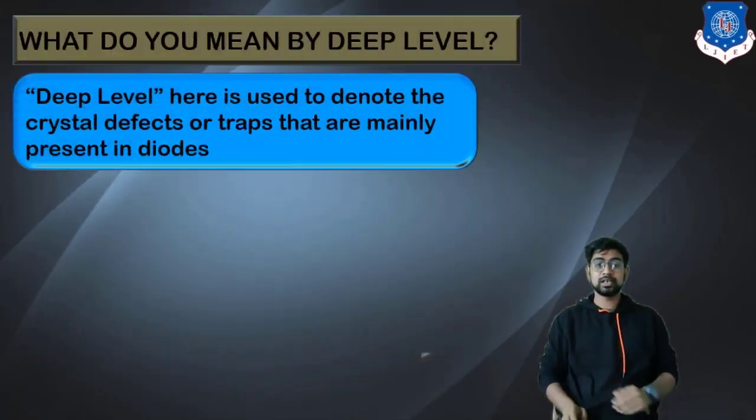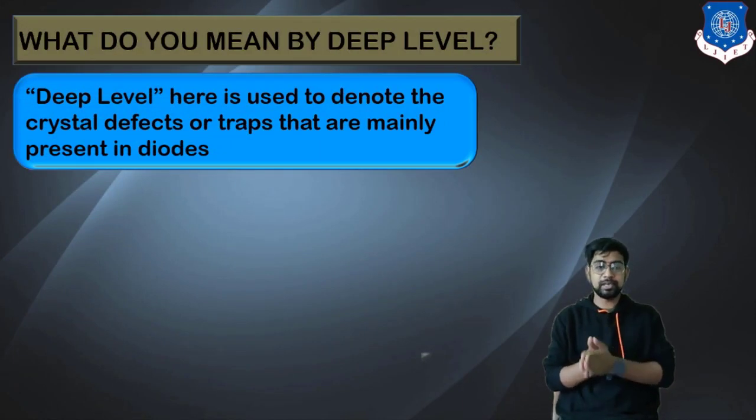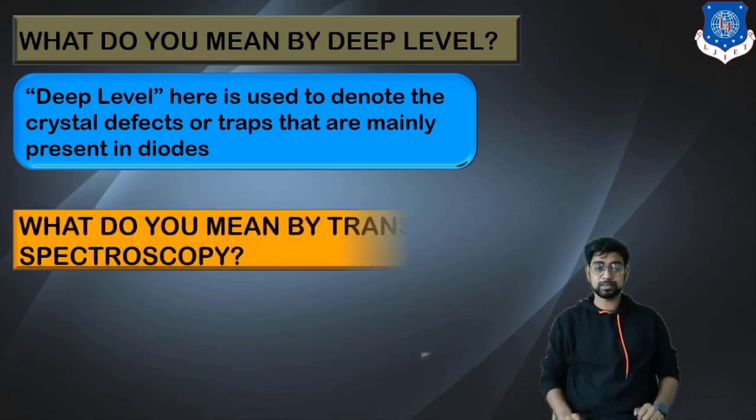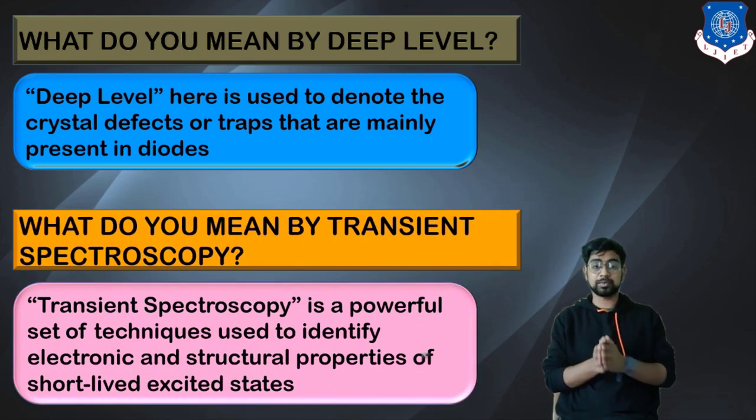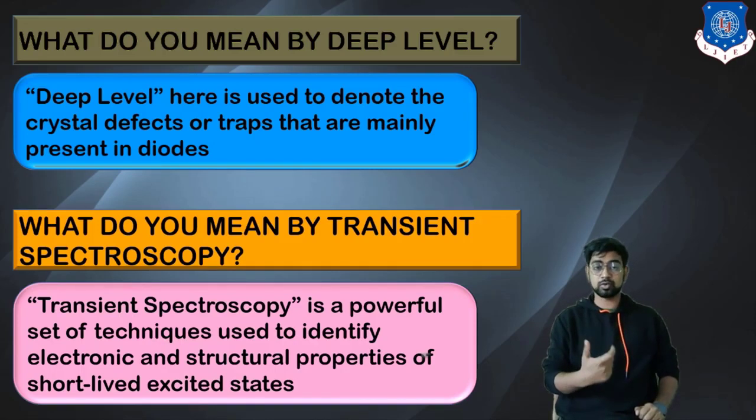What do you mean by deep level spectroscopy or deep level? Deep level denotes the crystal defects or traps that may be present in the diagram. These traps can be because of uneven distribution of impurities or some atoms are missing. Transient spectroscopy is a powerful set of techniques used to identify electronic and structural properties of short-lived exciting states.